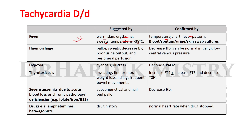When we find tachycardia with pallor, sweats, decrease in blood pressure, poor urine output and peripheral perfusion, as well as a decrease in hemoglobin level — which may be normal at the beginning — along with low central venous pressure, then we can say that the tachycardia is due to hemorrhagic conditions.